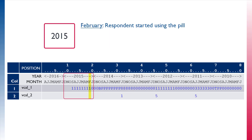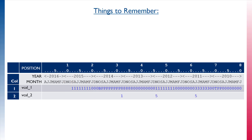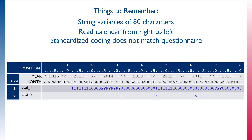In February 2015 the respondent started using the pill and was still using the pill in the month of the interview. Remember: each column of the calendar is stored as a string variable in the dataset, each string variable contains 80 characters, the data must be read right to left for chronological order, and the standardized codes are recoded and will not match what was directly put into a questionnaire.